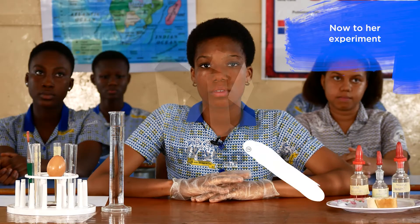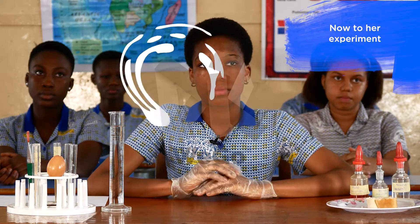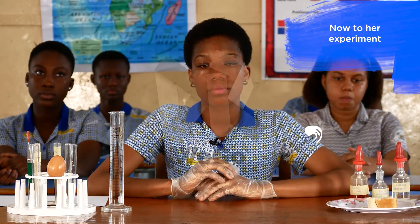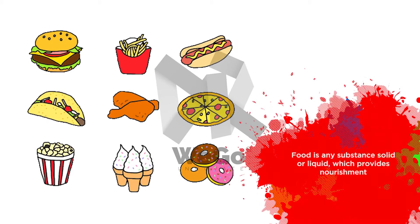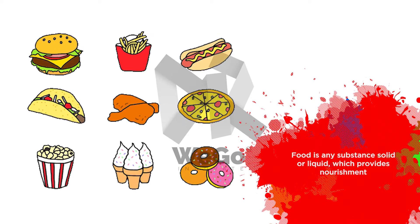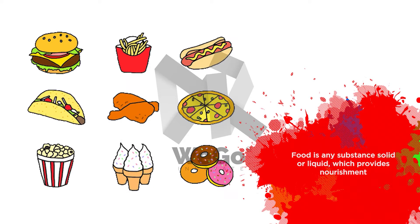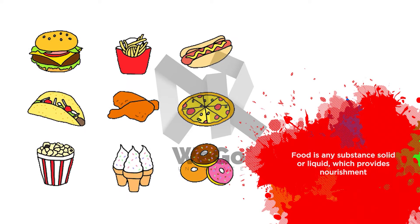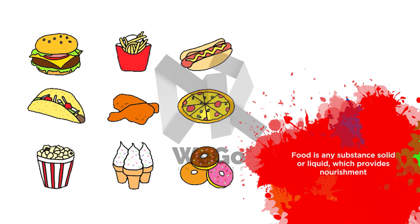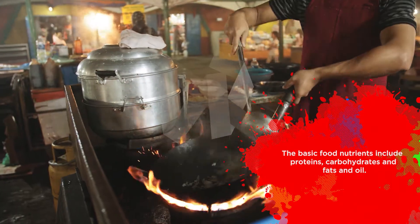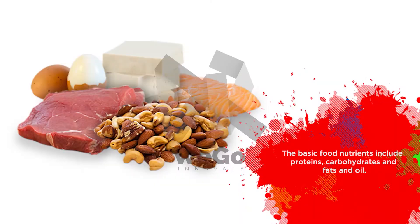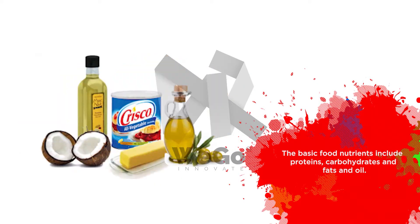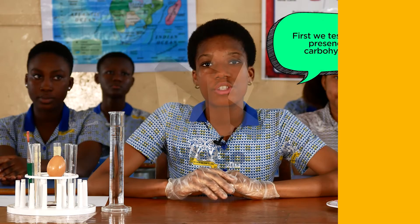Now to her experiment. Food is any substance, solid or liquid, which provides nourishment. The basic food nutrients include proteins, carbohydrates, and fats and oils.